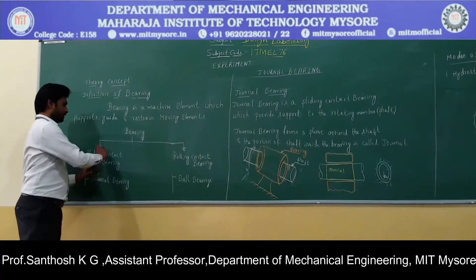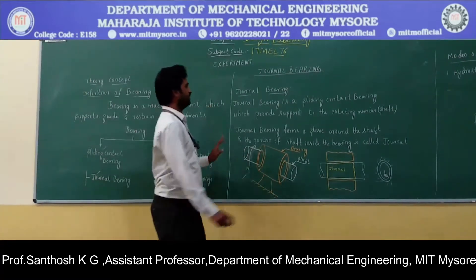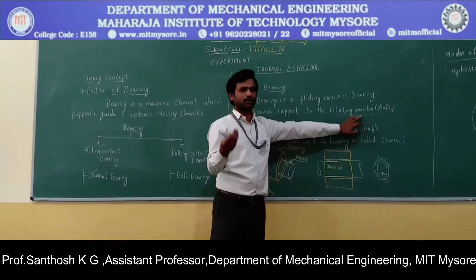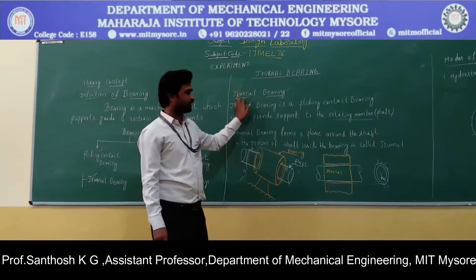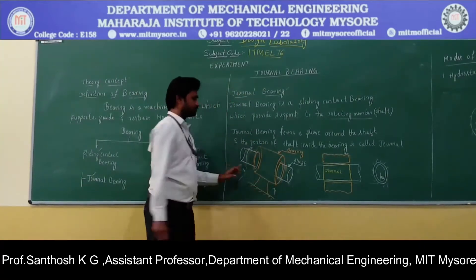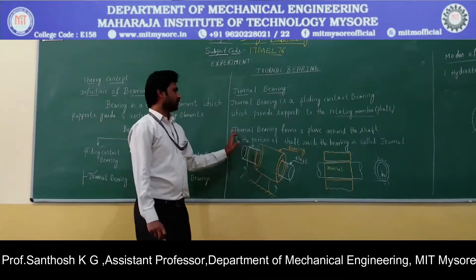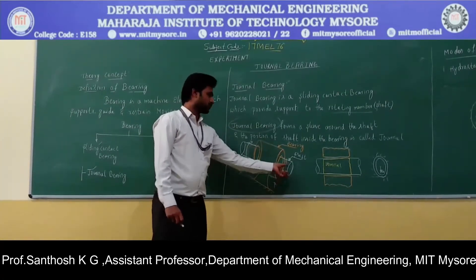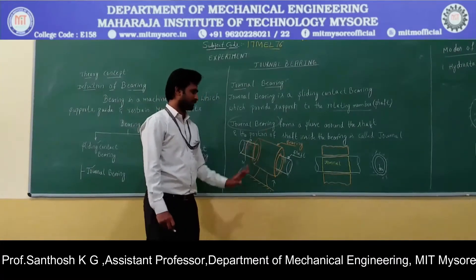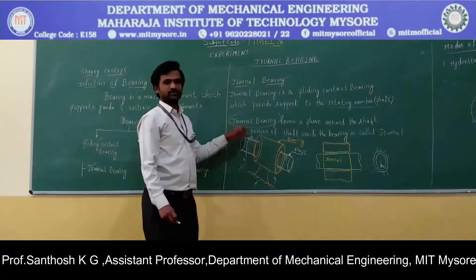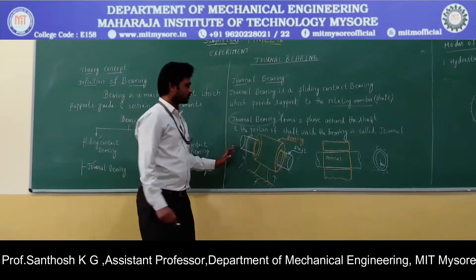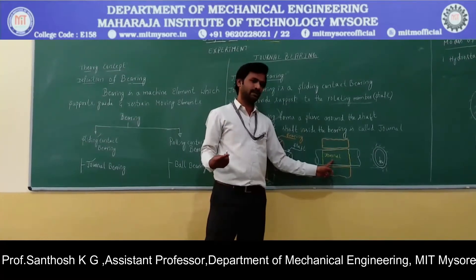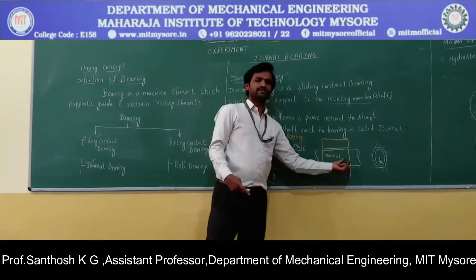The journal bearing falls under sliding contact bearing. Now let us see the definition of a journal bearing. If the bearing is used to support a moving member like a rotating shaft, then the bearing is called a journal bearing. This diagram represents the schematic of a journal bearing. Usually the journal bearing is in the form of a sleeve on the shaft. The shaft is inserted into this sleeve which is the bearing. The bearing is fixed and the shaft rotates at a certain speed. The portion of the shaft which is inside the bearing is called the journal — the journal is simply another name for the shaft inside the bearing.